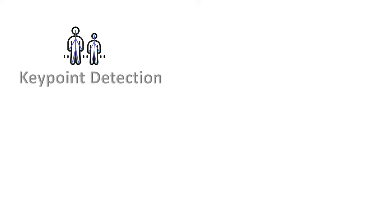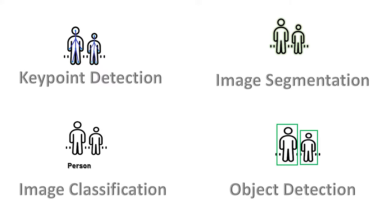Pose detection is part of a wider computer vision problem called keypoint detection. Alongside it, there are three other common computer vision problems: image segmentation, image classification, and object detection. In keypoint detection we localize predefined landmarks; in image segmentation we find the exact boundary of a target object; in image classification we classify the whole image; and in object detection we classify and localize objects. All four major problems have many subcategories.